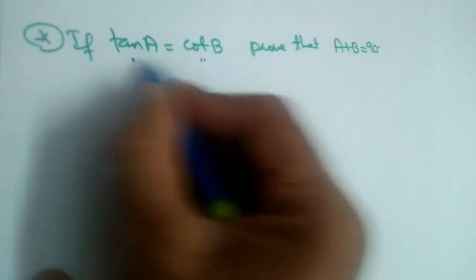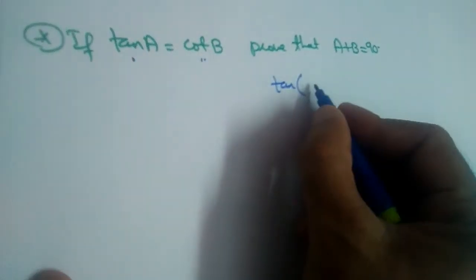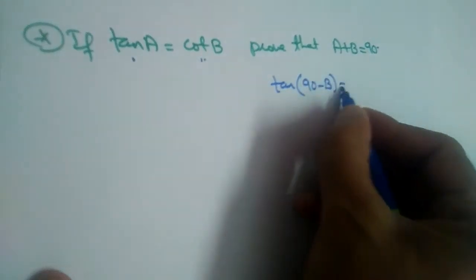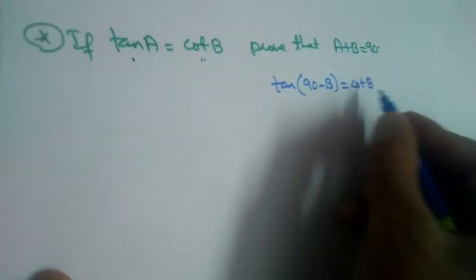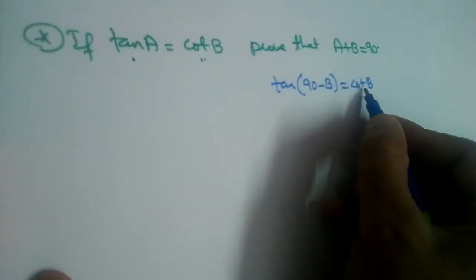We can change tan to cot or cot to tan using complementary angle formulas. So tan(90-B) is equal to cot B, so in place of cot B can we write tan(90-B)?